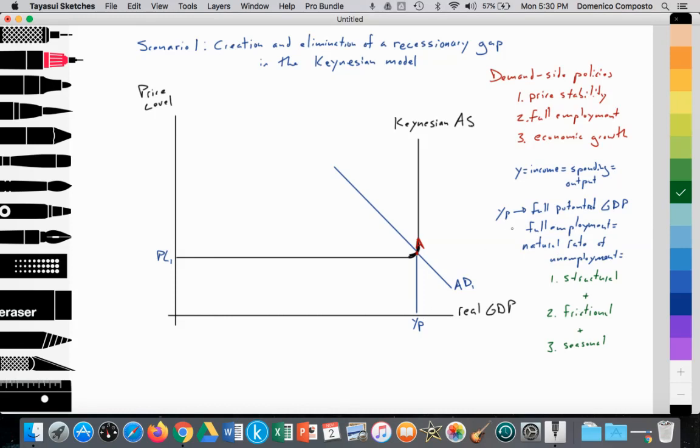So we're at YP, we're at full potential GDP, we have full employment, we're at the natural rate of unemployment. And just to give us an idea, each country has a different level of full employment. This is the long-run average level of unemployment within a country. The United States approximately has about 5% as their long-run average, so that's considered full employment.